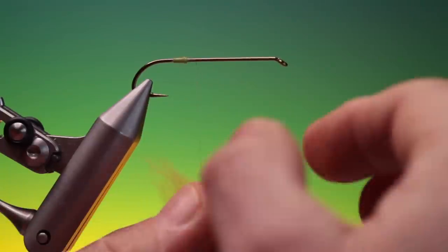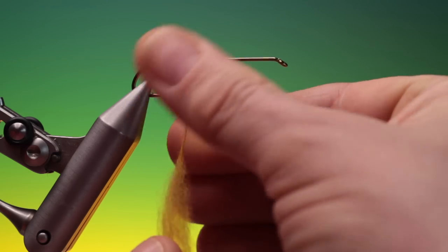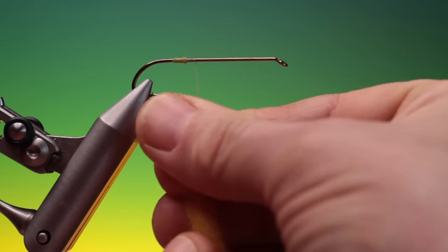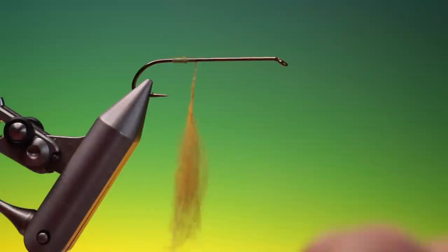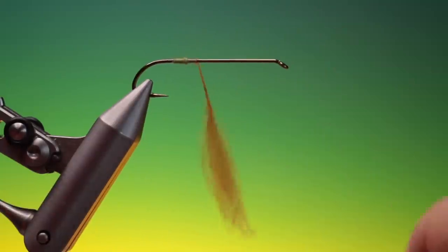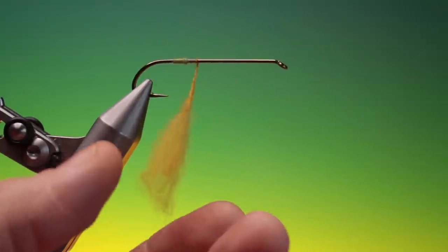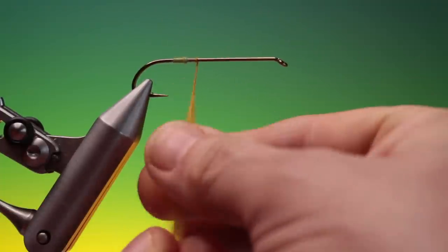And then I'll show you another bunch of dubbing. I'll show you how to make a segmented body. So we can put this in. And we do exactly the same. Wrap it. Catch it in. Couple of turns. So we want a segmented dry fly body now.